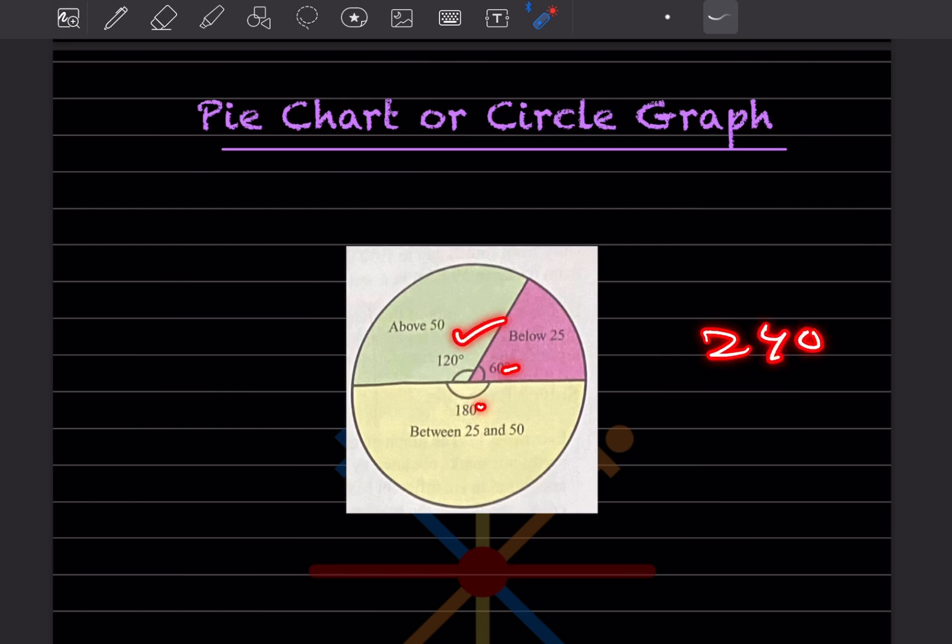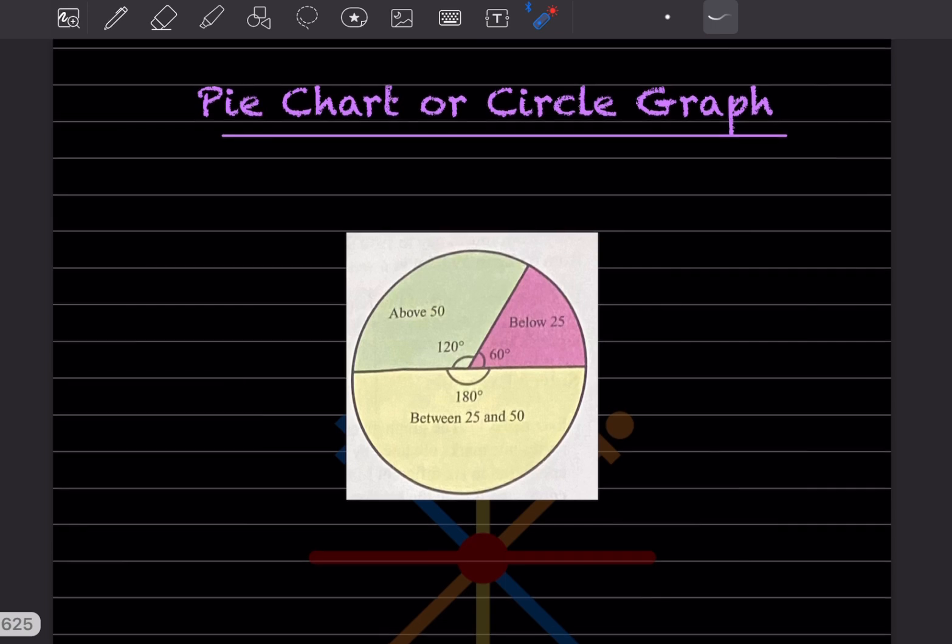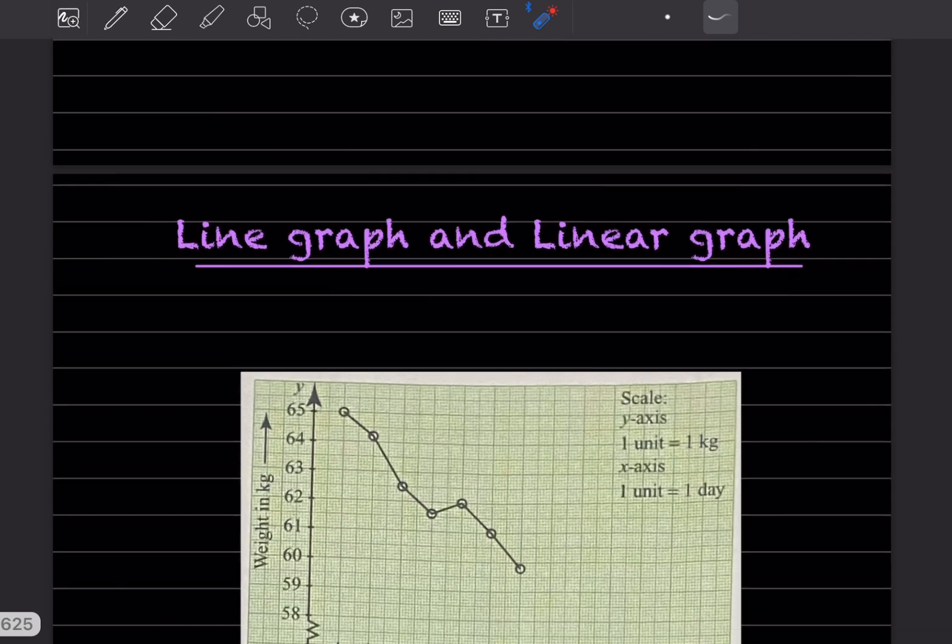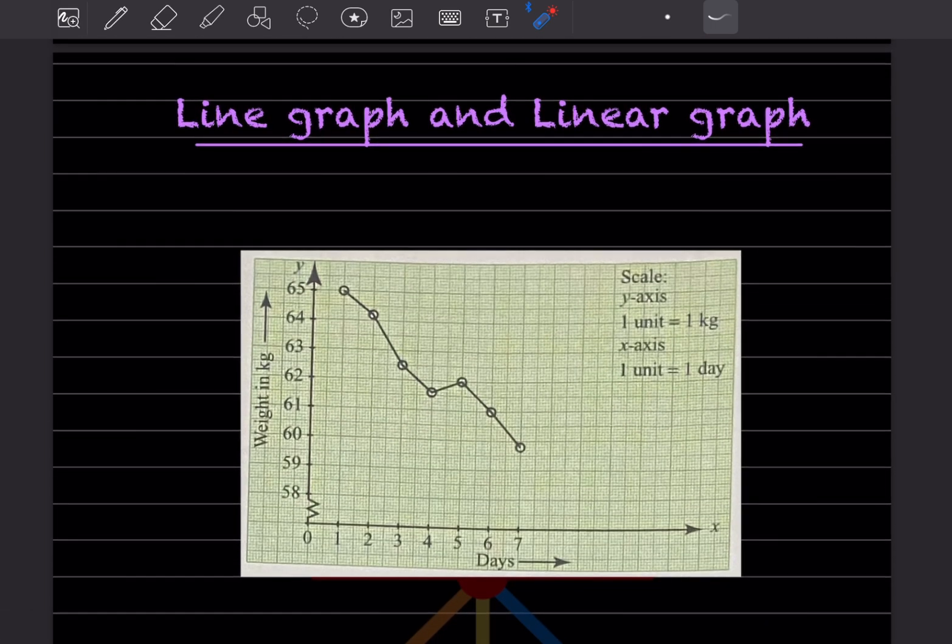This is called the pie chart or circle graph. And the next one - this is called the line graph, also called the linear graph. The graph should look like this. This is a short video.